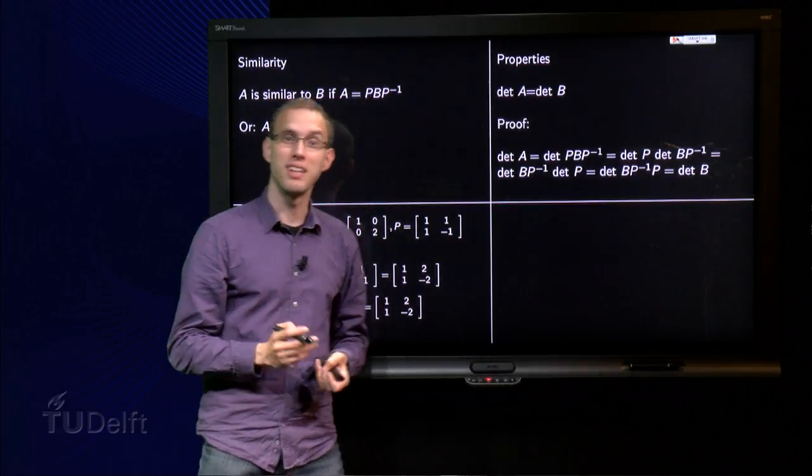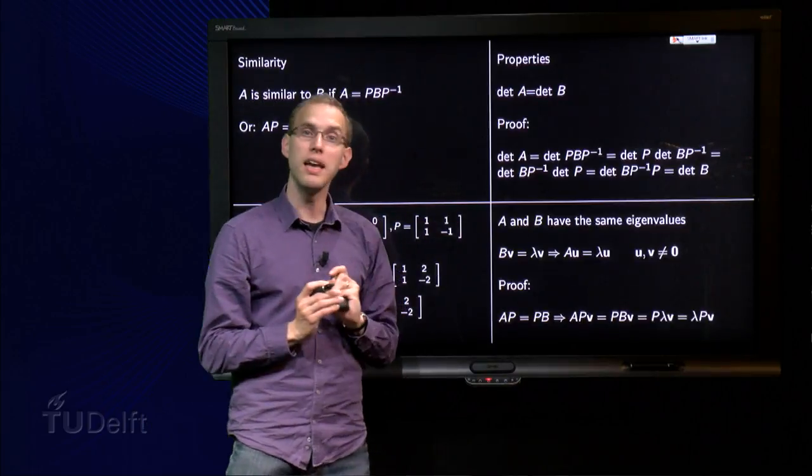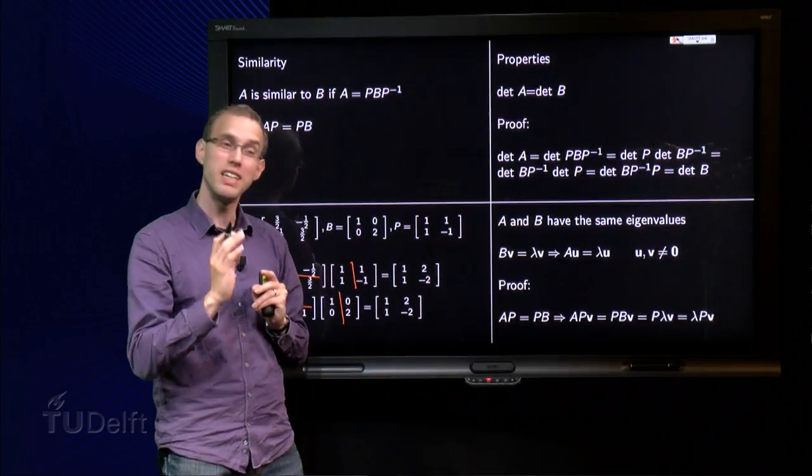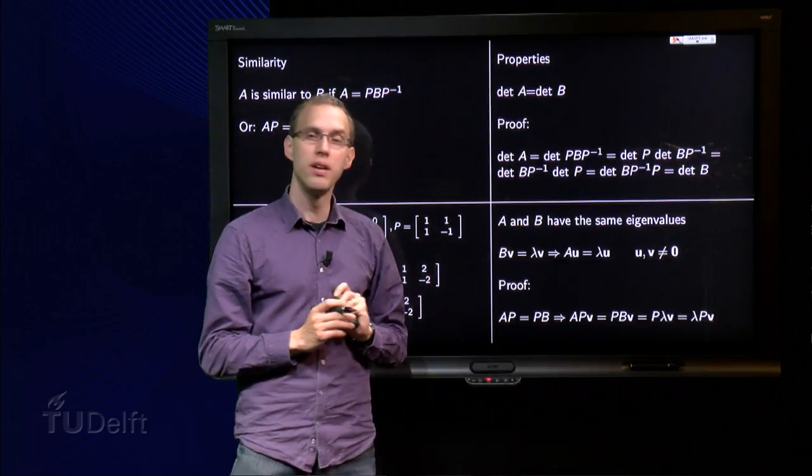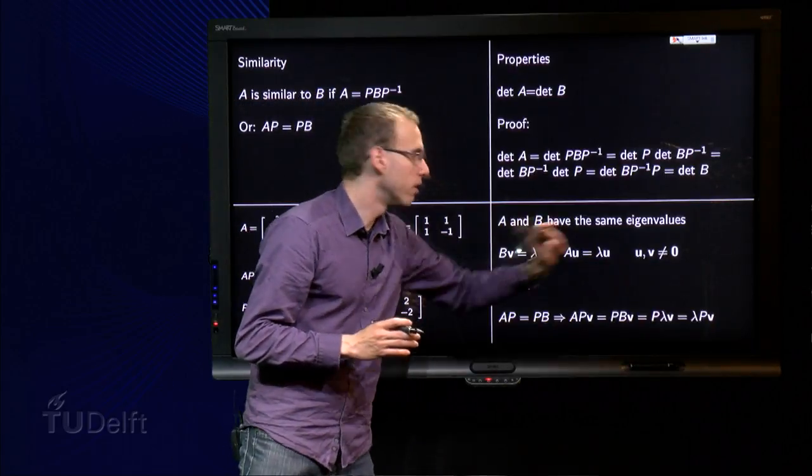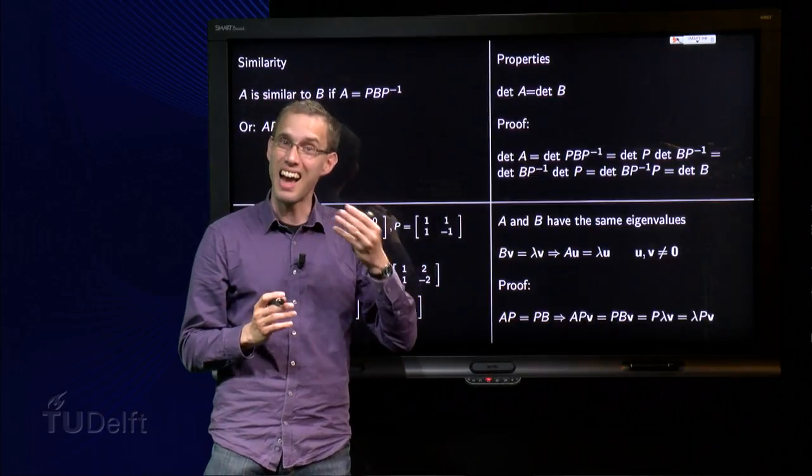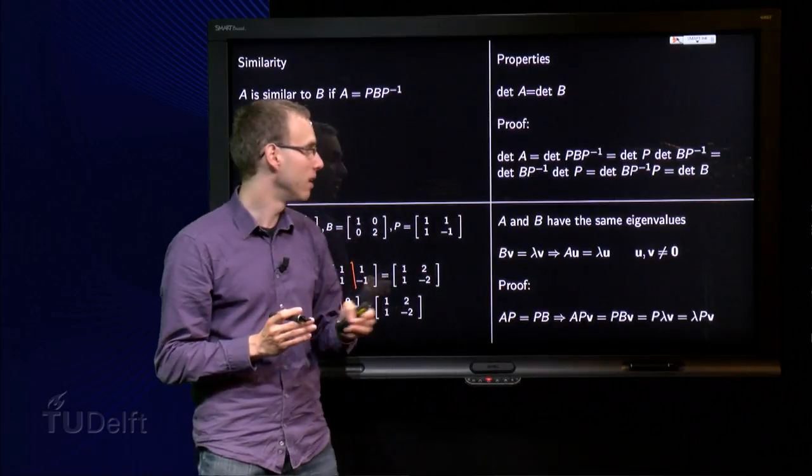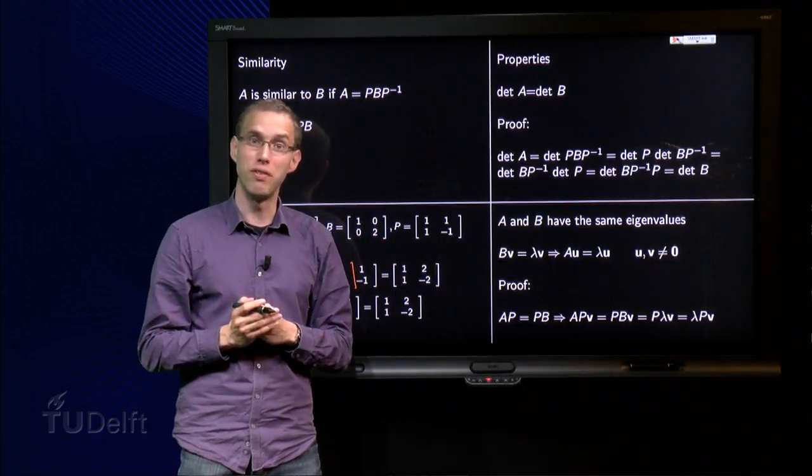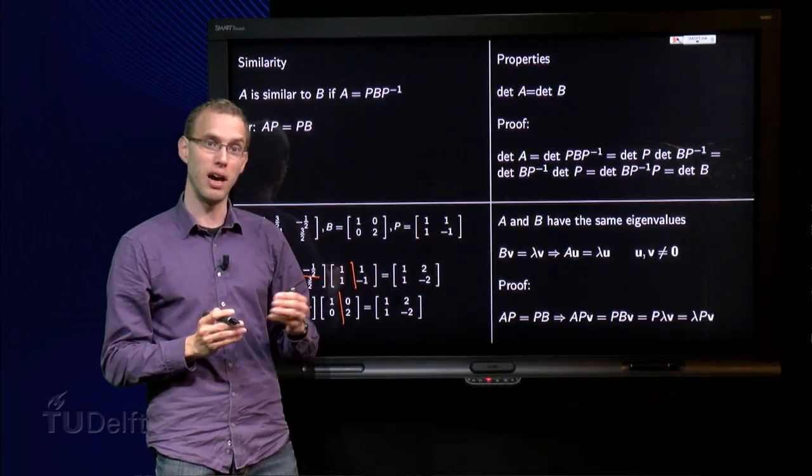So, even though A and B are not necessarily the same matrix, if they are similar, the determinants are always the same. We also know something really nice about the eigenvalues of those matrices. A and B have the same eigenvalues, if they are similar. So, why is that? If B times V equals lambda times V, with V a non-zero vector, so that means if lambda is an eigenvalue of B, that will show that lambda is also an eigenvalue of A, but with possibly a different eigenvector U. So, how is that?